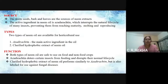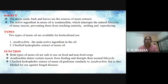So what is the source of this biopesticide? The neem seeds, bark, and leaves are the sources of neem extracts. The active ingredient in neem oil is azadirachtin, which interrupts the natural life cycle of many insects, preventing them from reaching maturity, molting, and reproducing. There are two types of neem oil available: one where azadirachtin is the main active ingredient in the oil, and the clarified hydrophobic extract of neem oil. Both types of neem oil are safe to use on food and non-food crops. Azadirachtin deters certain insects from feeding and disrupts their normal life cycle. Clarified hydrophobic extract of neem oil performs similarly to azadirachtin but is also labeled for use against fungal diseases.